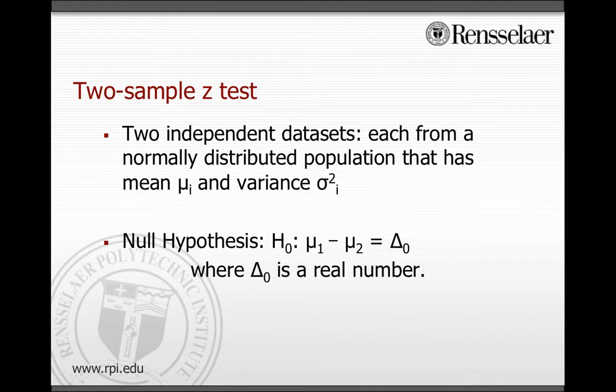The null hypothesis is written as μ₁ - μ₂ = Δ₀, where Δ₀ is some proposed real number, the difference.